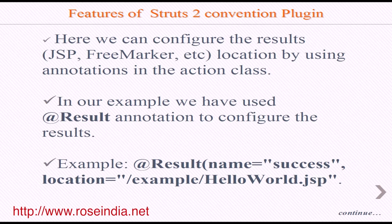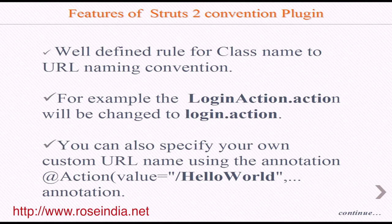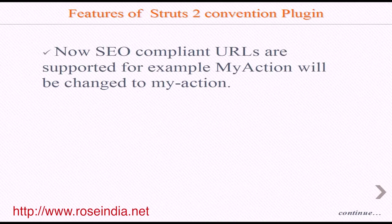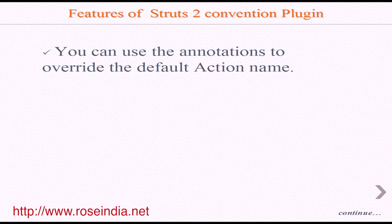You can configure the results location using annotations in the action class. In our example, we use the @Result annotation with name equal to 'success' and location 'example/helloWorld.jsp'. There is also a well-defined rule for class name to URL naming convention — for example, LoginAction will map to login.action. You can also specify your own custom URL name using the @Action annotation, setting value equal to '/helloWorld'.